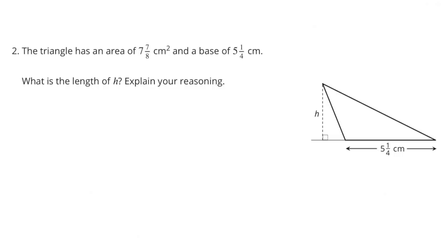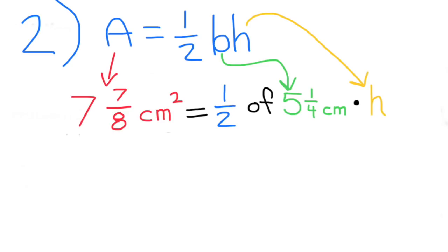Problem 2: The triangle has an area of 7 7/8 cm² and a base of 5 1/4 cm. What is the length of h? Explain your reasoning. The area of a triangle is one half of base times height.